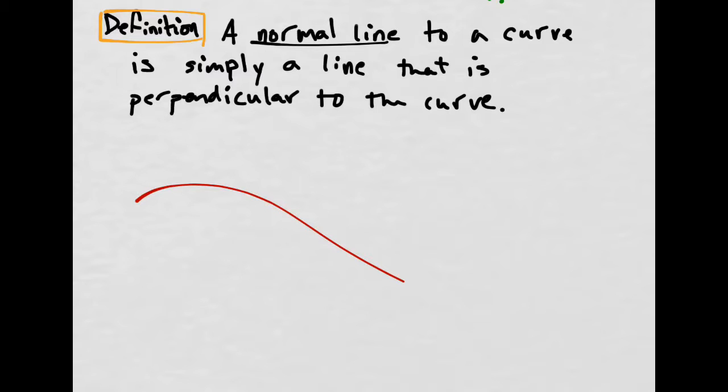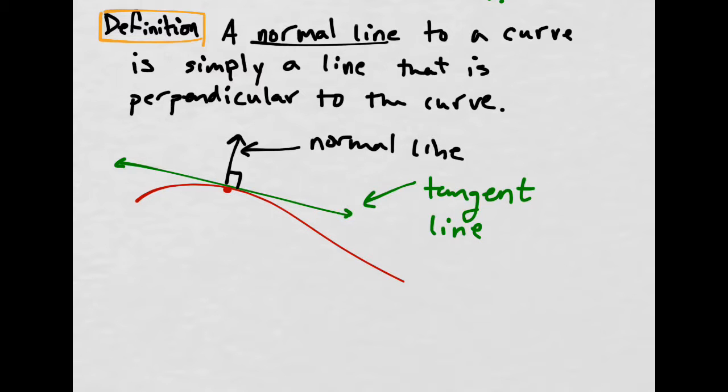So if we have a curve like that, the tangent line, let's do the tangent line in green. Ooh, sweet, that's pretty close. So that's the tangent line. So that's very nice. The normal line would be perpendicular to that. So there you have it. The normal line there is perpendicular. That's pretty cool. So that's really the only thing that's different in this section. If we can find the slope of a tangent line, we can also find the slope of a normal line.